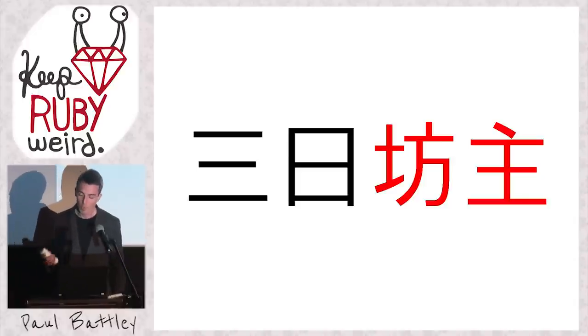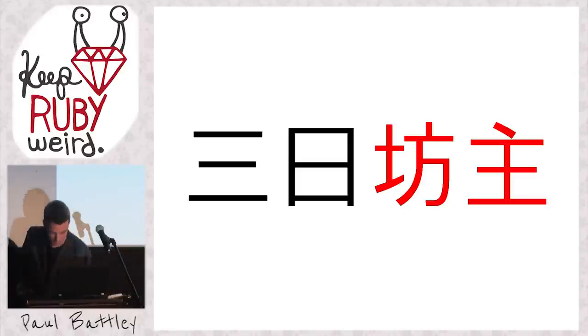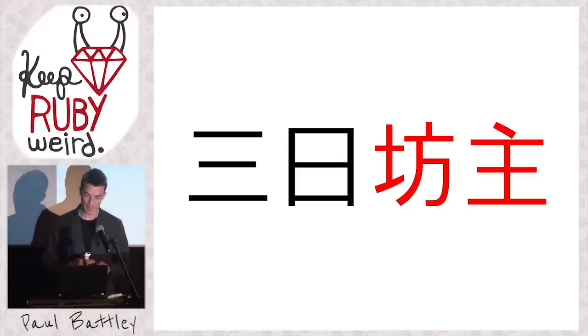There's a more general problem here: if our writing system is based on drawing pictures of stuff, how do we represent things that we can't draw pictures of? In other words, how do we represent abstract concepts?